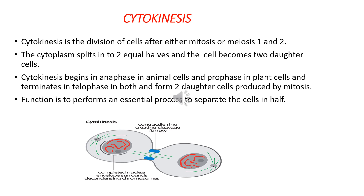Today we will discuss cytokinesis. Cytokinesis is the division of cells after either mitosis or meiosis 1 and 2. In this, the cytoplasm will split into two equal halves and the cell becomes two daughter cells.